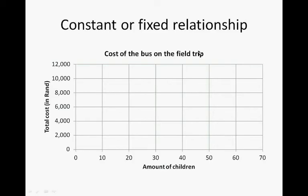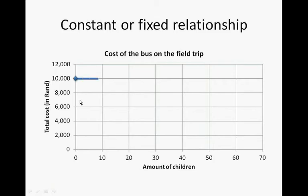Remember, we need to add a heading to our graph. The independent variable is the amount of children, and the total cost is the dependent variable. That's why the children goes on the horizontal axis and the cost goes on the vertical axis. And this is how we would draw the graph.